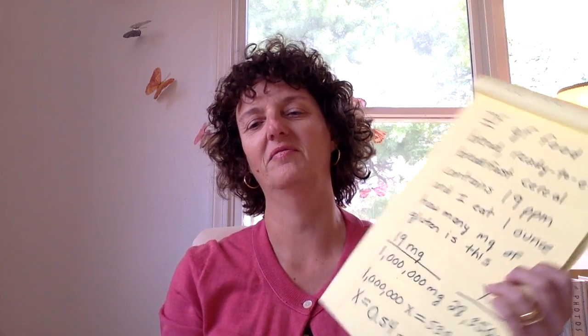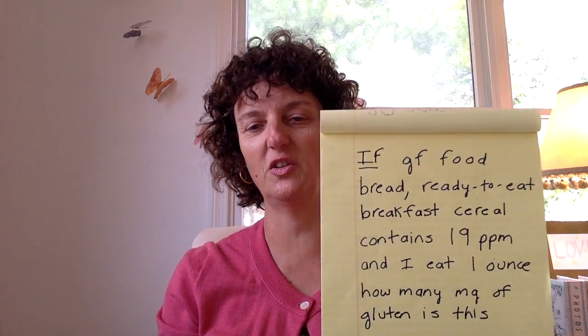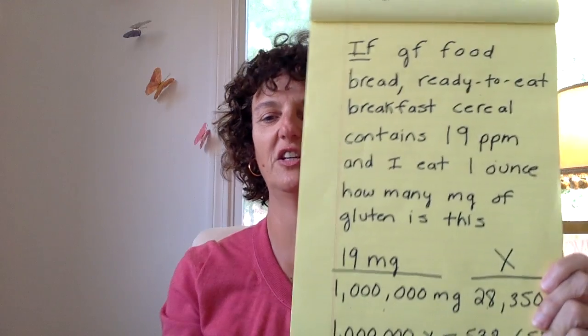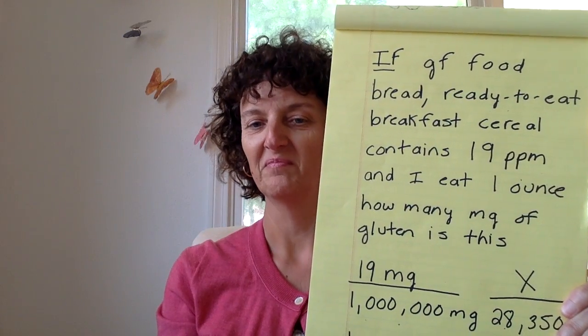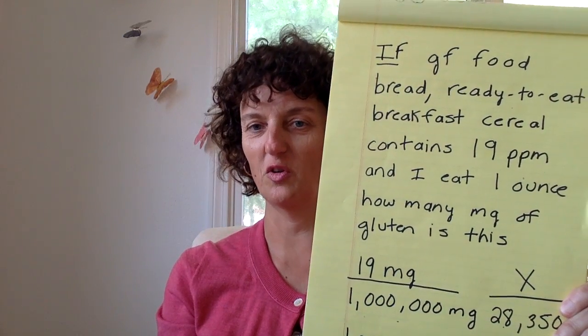A kilogram of food is approximately equal to 2.2 pounds. I know that we are far more used to dealing in pounds than we are in kilograms, so I have a little visual aid that you can use, hopefully, to help you figure out your own math.